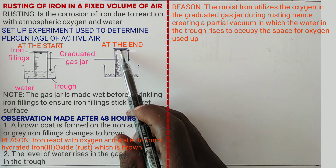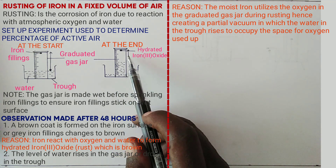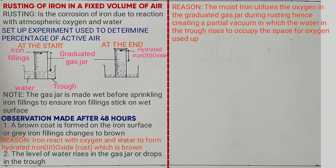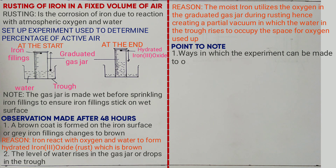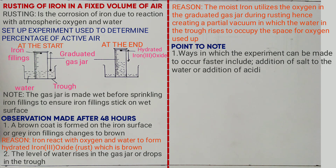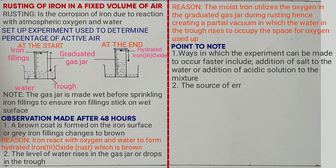At the end of the experiment, we have hydrated iron(III) oxide formed. Points to note: you may be asked to suggest ways to make the experiment occur faster — by addition of salt in the water or by addition of an acidic solution into the mixture. The percentage of active air is obtained by: initial volume minus final volume, over initial volume, times 100%. A source of error is that iron may not react with all the oxygen after 48 hours.